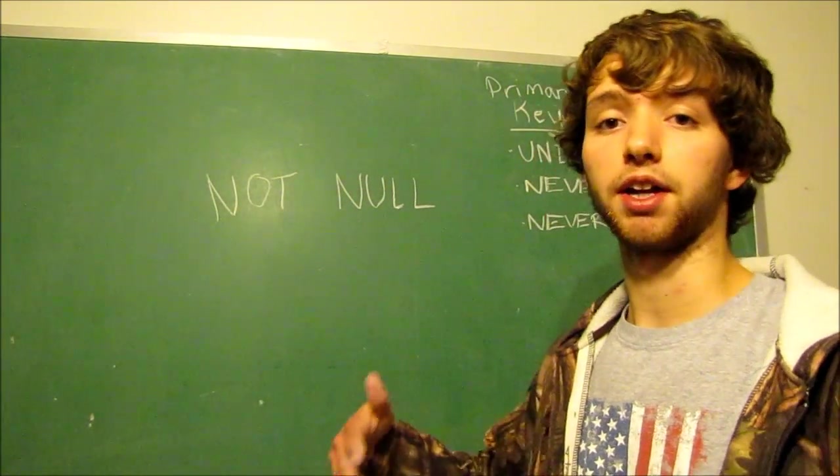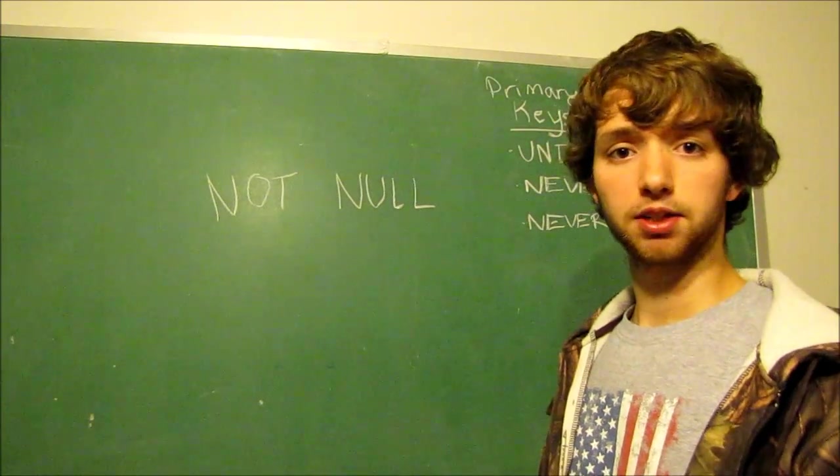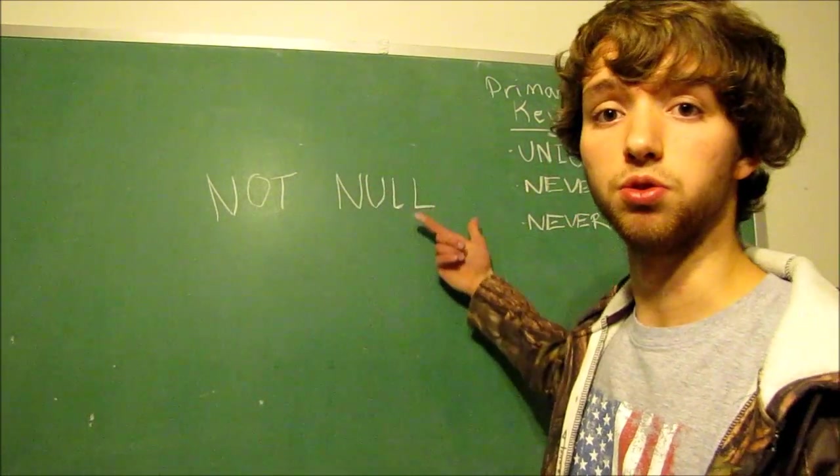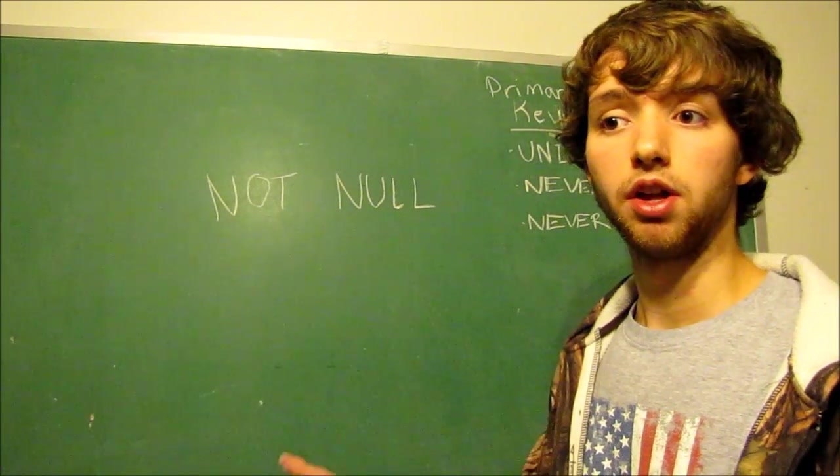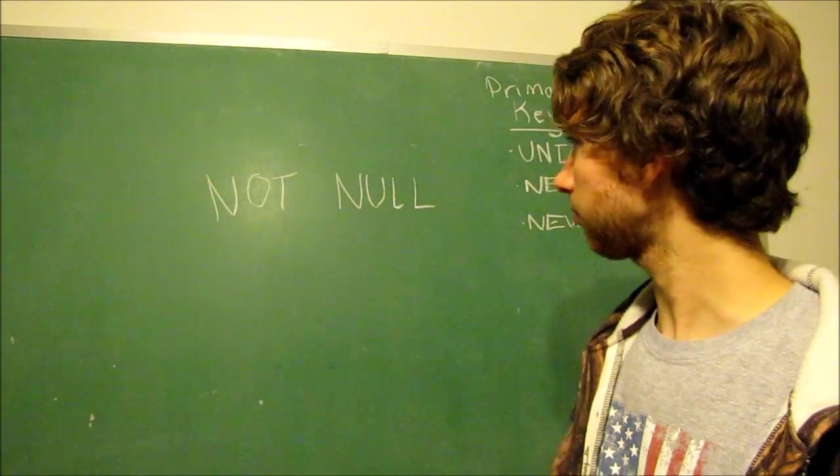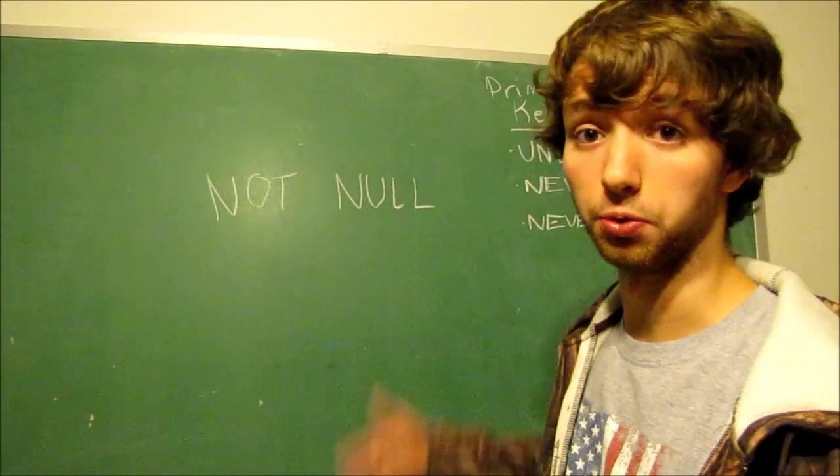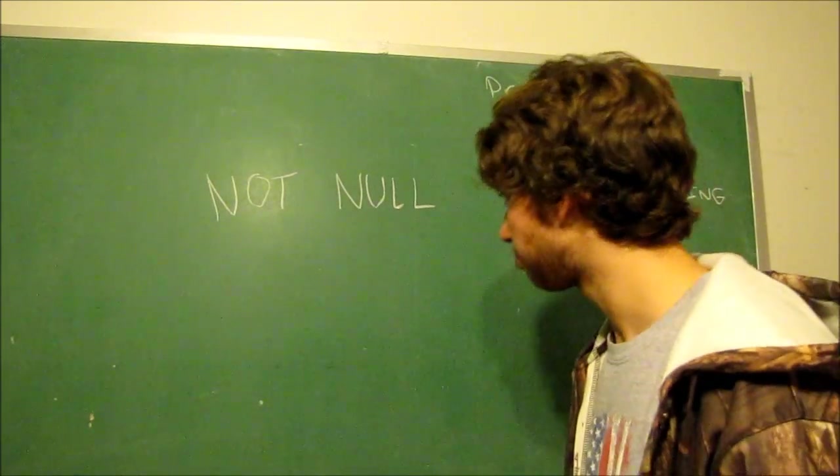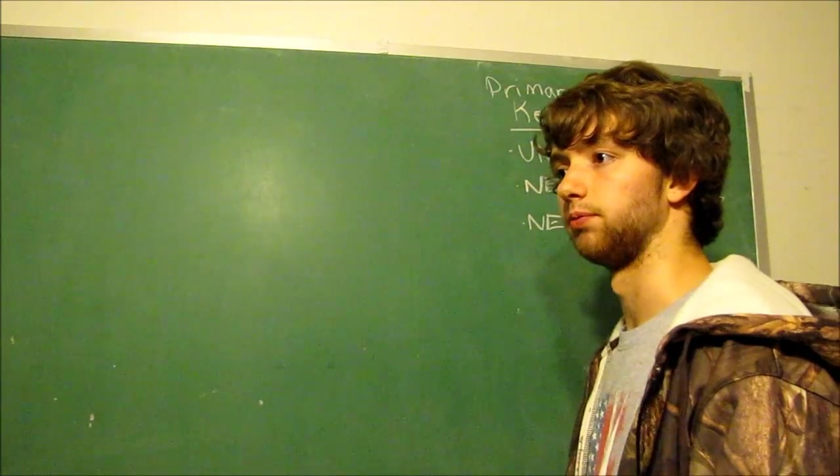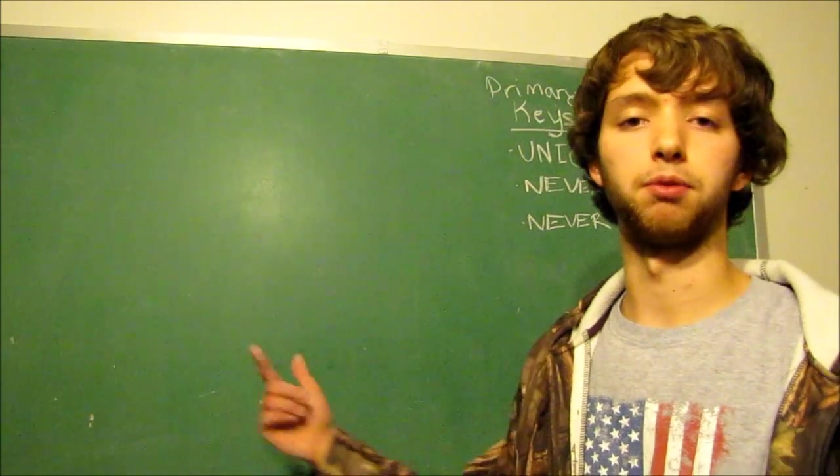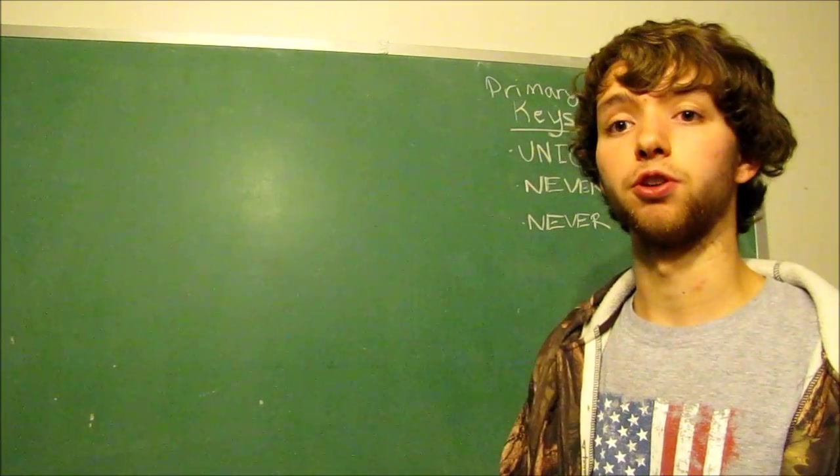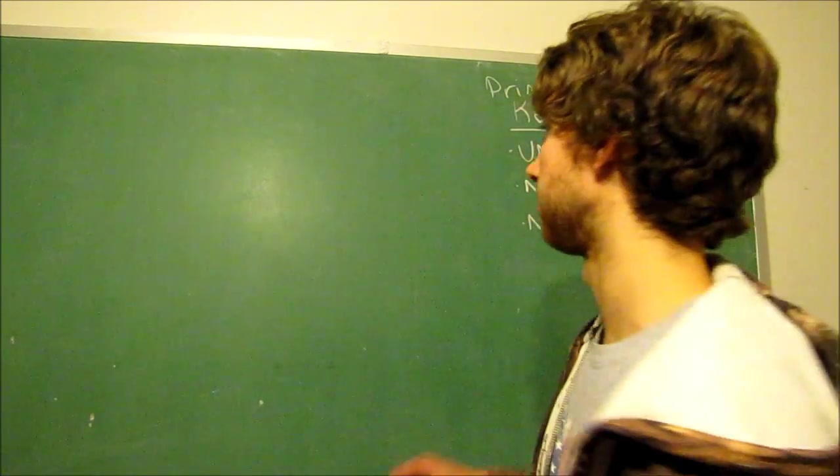Think of like a fax number. Does everyone have a fax machine? No, most people don't. So if I set it as not null and I didn't give it a fax number then it would throw an error and cause problems. That's an example of how not null works. Now this is important when it comes to foreign keys because it has to do with what's known as cardinality. It's basically whether or not a relationship is required.